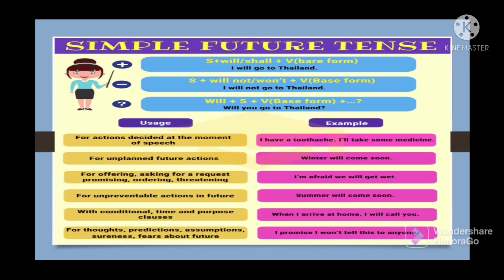Now let us see the usage of simple future tense. When do we use simple future tense? Simple future tense is used for actions decided at the moment of speech. Like if we take here: I have a toothache, I will take some medicine. Now I have a toothache, so I will take some medicine immediately.